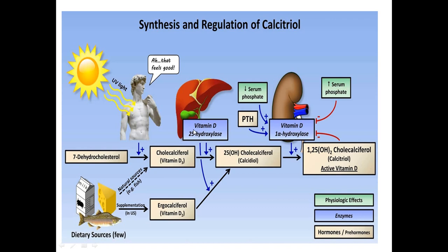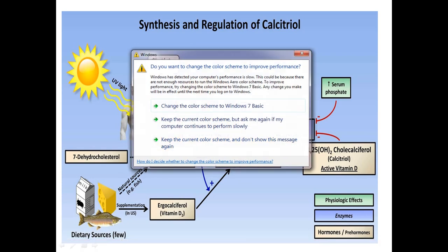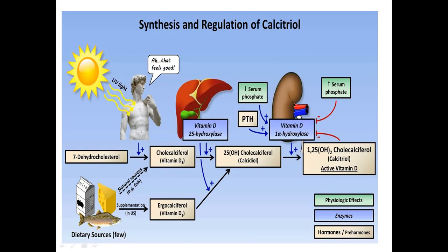In vitamin D metabolism, when it converts, it converts via hydroxylase to calcifediol and calcitriol. When it converts calcitriol, it involves the kidney, where 1-alpha hydroxylase activates vitamin D3, vitamin D2, and vitamin D.